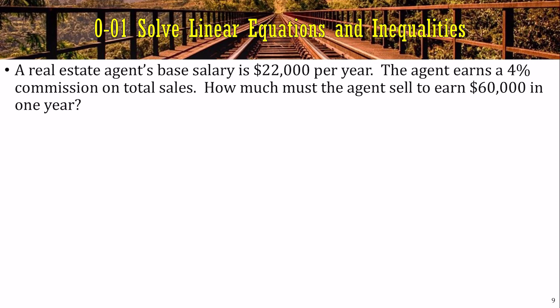And now, a word problem. A real estate agent's base salary is $22,000 per year. Well, that doesn't seem like much. The agent earns a 4% commission on total sales. That means they sell a $100 house, they get 4% of that, or $4. Of course, houses aren't $100 or $100,000. How much must the agent sell to earn $60,000 in one year? Alright. So the amount of money, maybe we'll call that M, is $22,000 a year plus 4%.